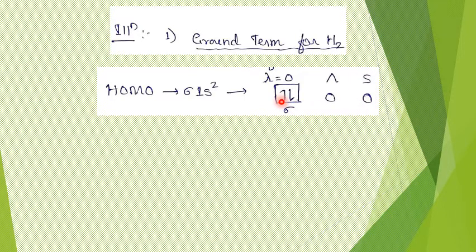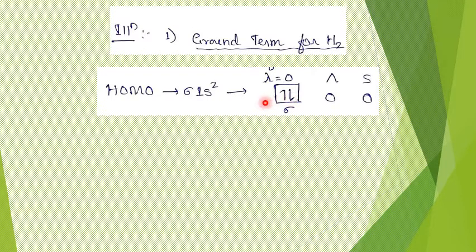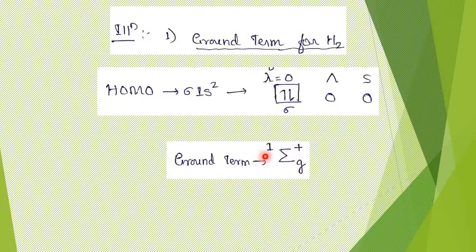Number of unpaired electrons plus 1 gives the spin multiplicity. In H₂, there are 0 unpaired electrons, so spin multiplicity is 1. The capital Lambda value is 0, so this is a Sigma term. Now we decide G or U: this is a sigma bonding molecular orbital, and sigma bonding molecular orbital has parity G. So for both electrons it is G, and G × G = G, giving subscript G.